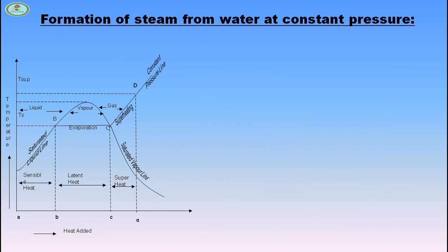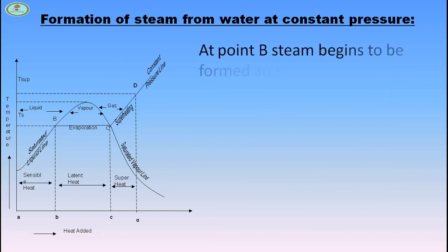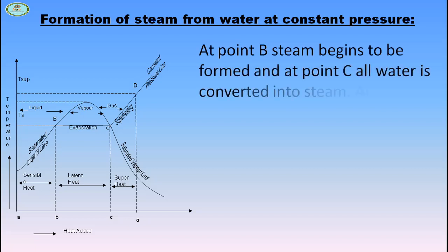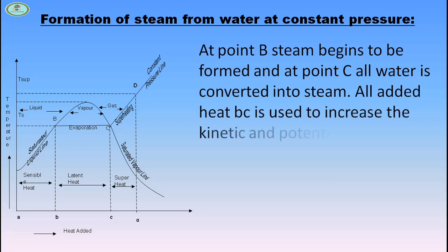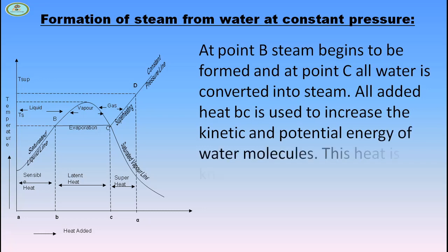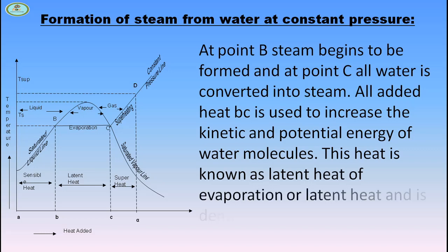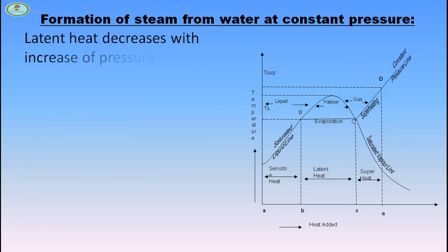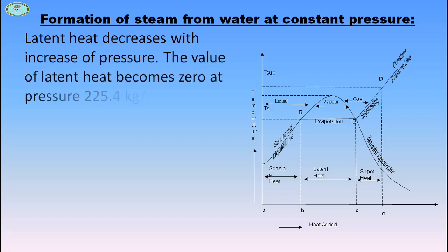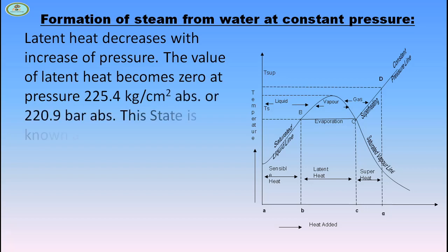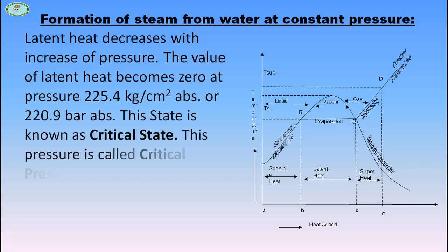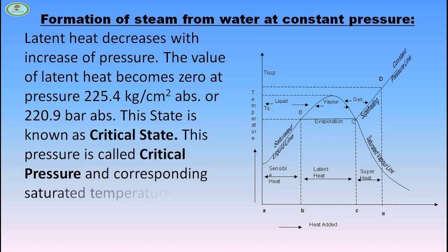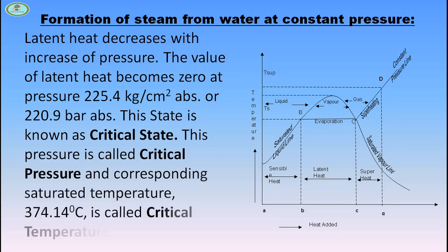At point B, steam begins to be formed, and at point C, all water is converted into steam. All heat added from B to C is used to increase the kinetic and potential energy of water molecules. This heat is known as the latent heat of evaporation and is denoted by the letter L. Latent heat decreases with increase of pressure. The value of latent heat becomes 0 at a pressure of 225.4 kg/cm² absolute or 220.9 bar absolute. This state is known as the critical state. This pressure is called the critical pressure, and the corresponding saturation temperature of 374.14°C is called the critical temperature of steam.